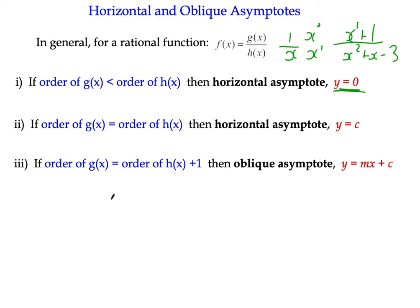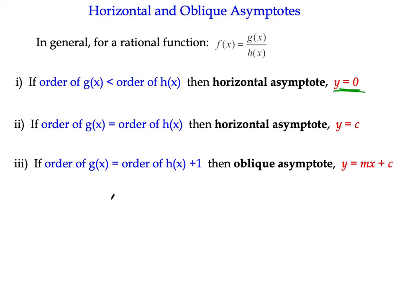If the order of the two polynomials is the same - so we're dealing with x terms, x squared terms - then there will still be a horizontal asymptote, but it will not be on the x-axis. It will be y equals some value other than 0.